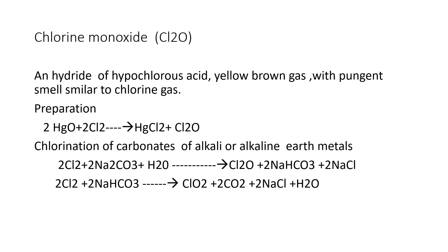Further, Bicarbonate reacting with Chlorine gives ClO2 plus 2CO2 plus 2NaCl plus H2O. So when Chlorine is treated with the carbonates, in the first step Chlorine Monoxide is released and Carbonate is converted to Bicarbonate. Again, in the second step, Bicarbonate further reacts with Chlorine giving Sodium Chloride, Chlorine Monoxide, Carbon Dioxide, and Water.